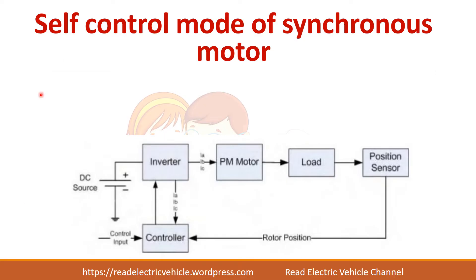This is the block diagram of a self-controlled mode of synchronous motor. We have an inverter fed with DC supply, and we want to control the frequency of this inverter. The inverter frequency is determined by the rotor position information. This inverter supplies the synchronous motor. A permanent magnet motor is a type of synchronous motor, and the rotor position is sensed using a position sensor. Based on the rotor position, the frequency is calculated, and the inverters are fired so that the inverter frequency matches the position sensor information.